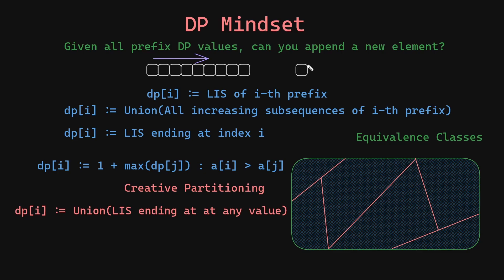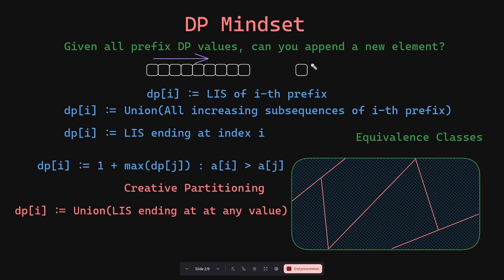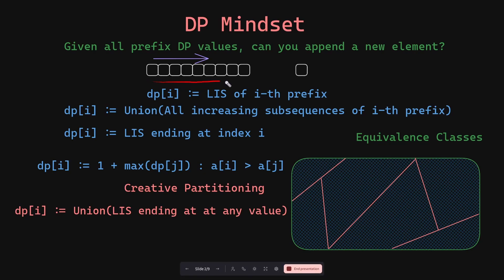Let us start with the very simple problem of finding the longest increasing subsequence of an array. How do you come up with the DP formulation for this problem? A common technique is to start with any DP formulation you can think of. A beginner might come up with the definition that DP of i stores the longest increasing subsequence of this prefix, because naturally this is what the problem asks us to compute.